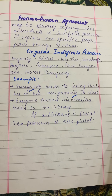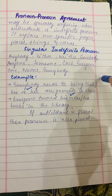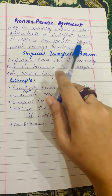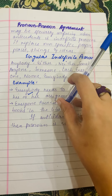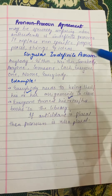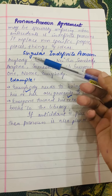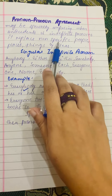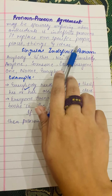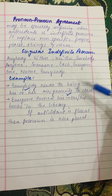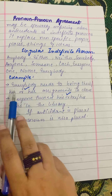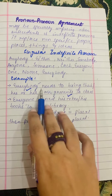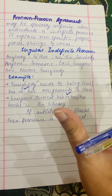Pronoun-pronoun agreement can be especially confusing when the antecedent is an indefinite pronoun, such as: anybody, either, neither, each, someone, one, no one, somebody. These replace non-specific people, places, things, or ideas. For example: 'Everybody needs to bring their — or his or her — assignments to class.' Here we don't know exactly who 'everybody' refers to.